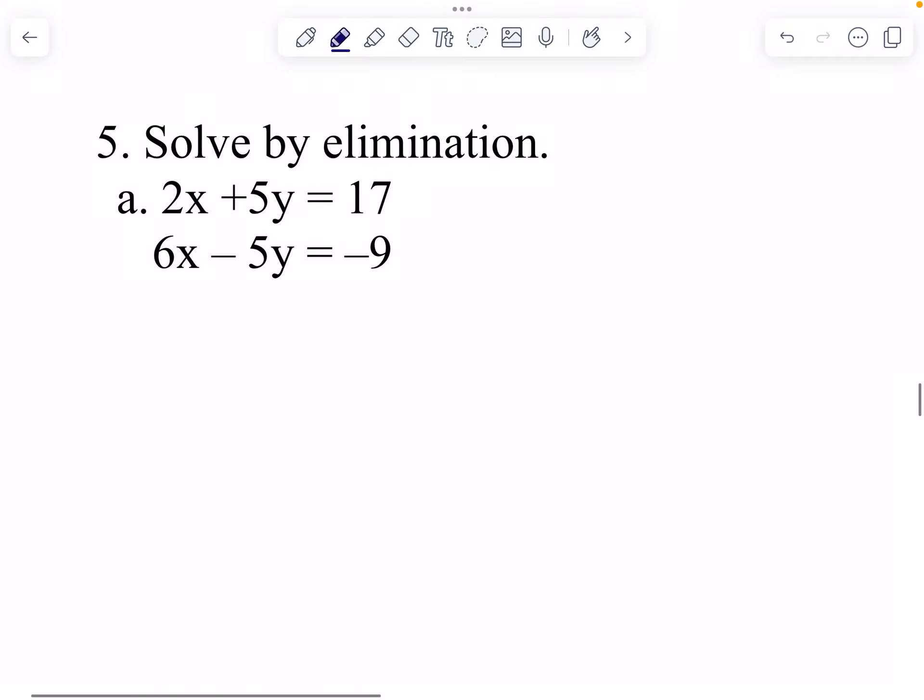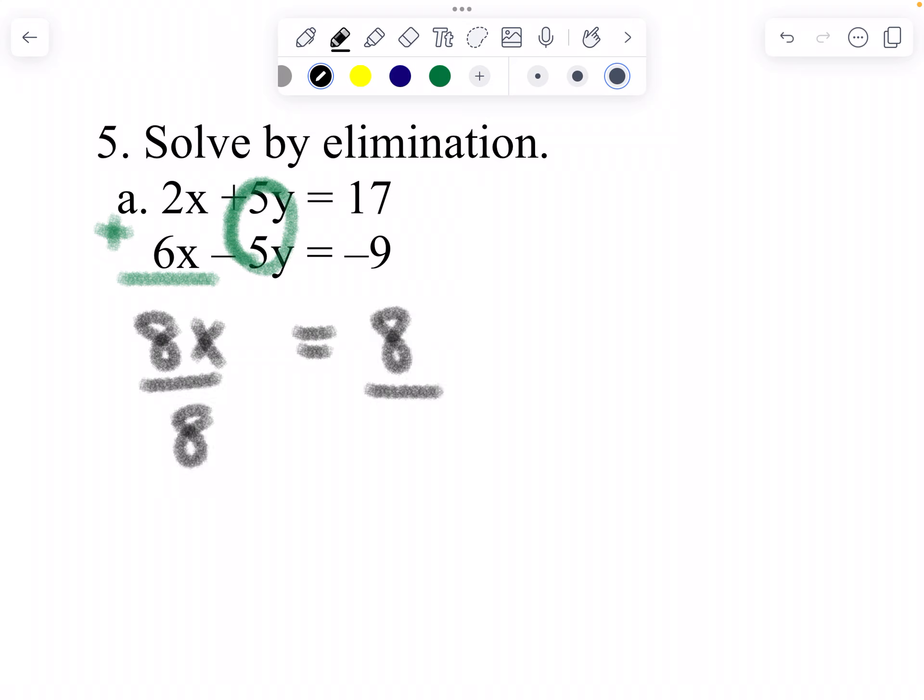Elimination. Easy, right? I hope you guys find it easy. That's a zero right there. Add that. Get 8x equals 8. Add those. You get 8 positive. Divide by 8. You get x equals to 1.